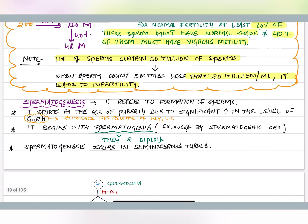Now starting the gametogenesis part. In males, the process of formation of gametes is known as spermatogenesis — the formation of sperms. Spermatogenesis starts at the age of puberty due to a significant increase in the level of GnRH, which stimulates the release of FSH and LH. Spermatogonia act as the precursors of spermatogenesis, and it occurs in the seminiferous tubules.